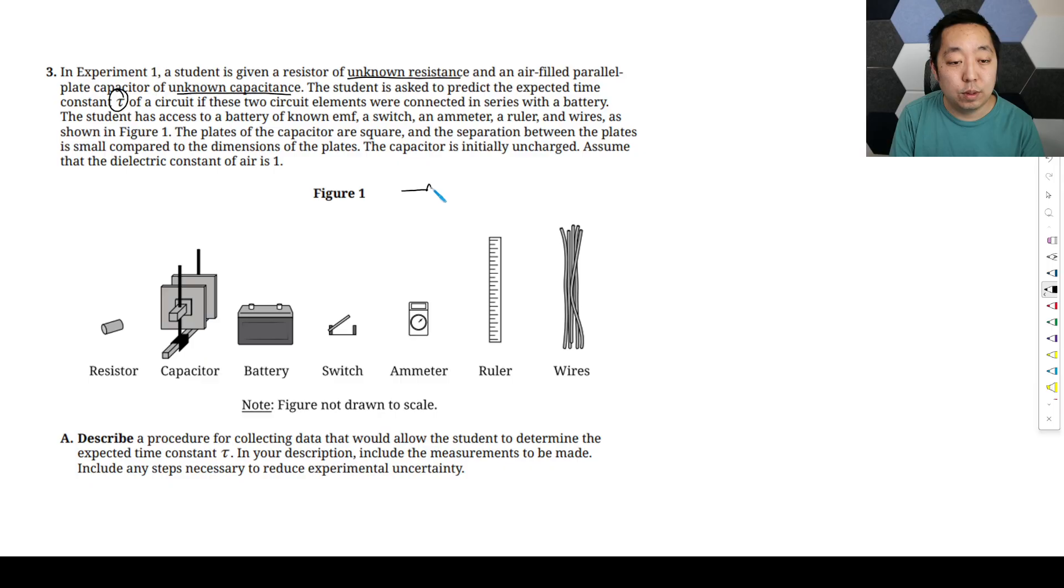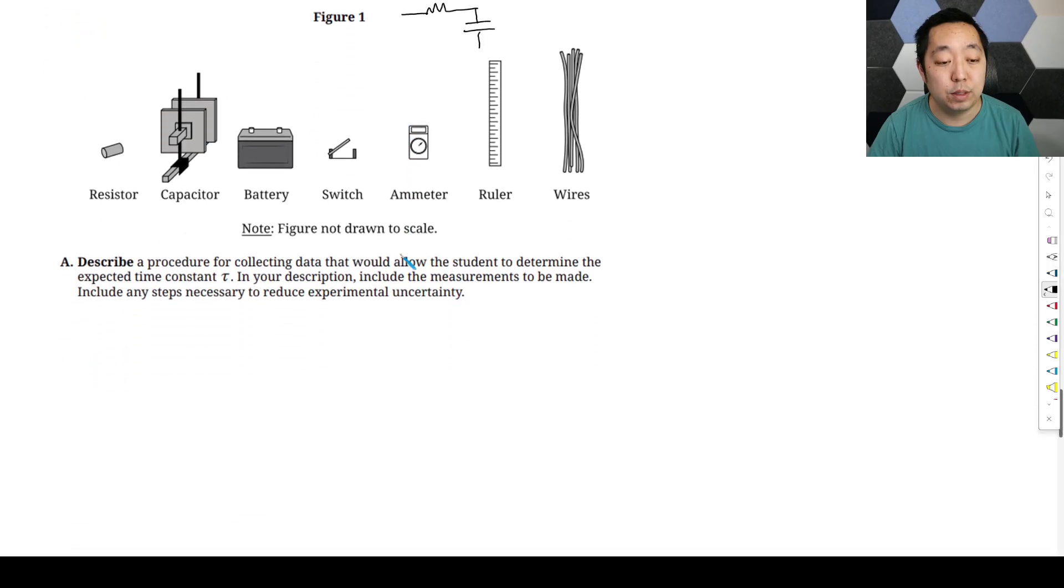It's given a resistor of unknown resistance, air-filled capacitor with unknown capacitance. Student asked to produce the expected time constant of the circuit if these two circuit elements were connected in series with a battery. So we're going to put them in series. You can even imagine we're going to put a resistor and a capacitor in series like that. The student has access to a battery of known EMF, a switch, an ammeter, a ruler, and wire. So they didn't give us a voltmeter, right? Only measuring the current.